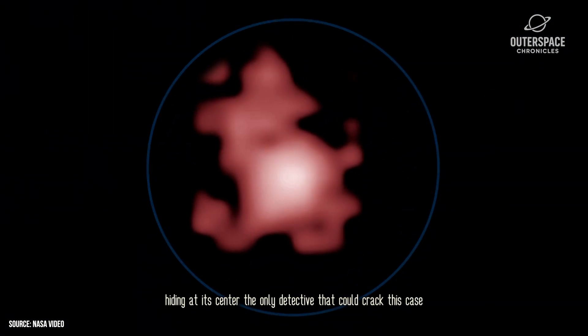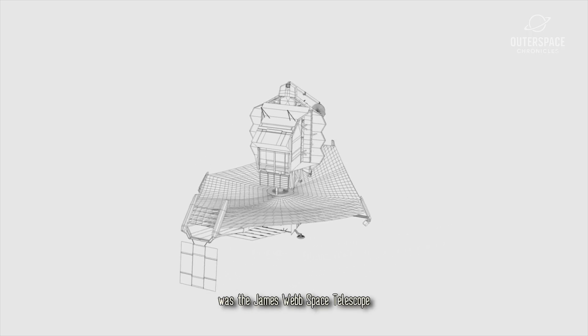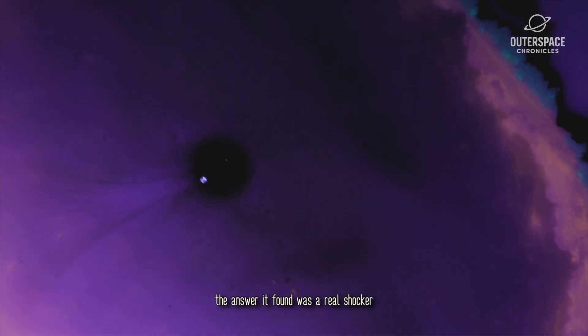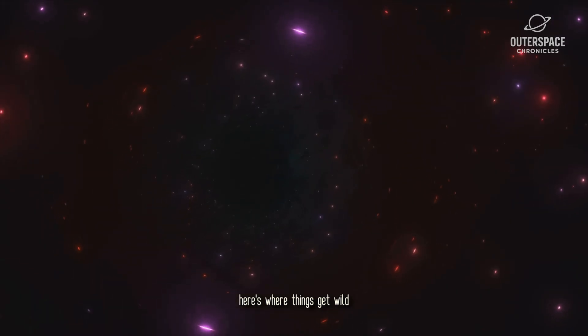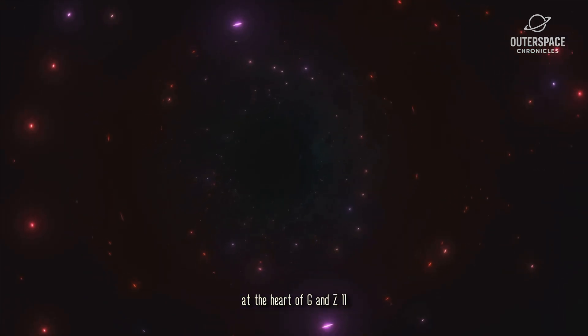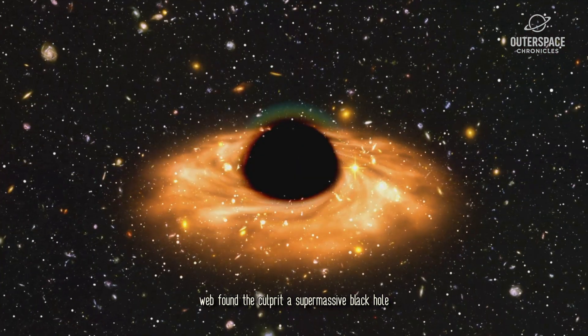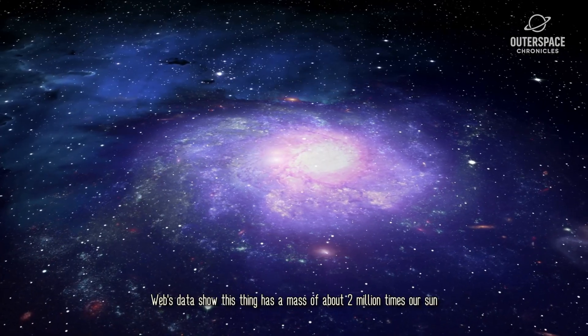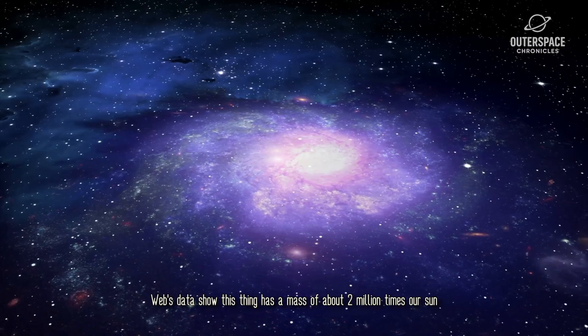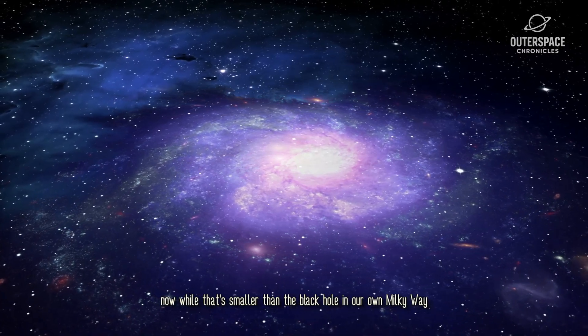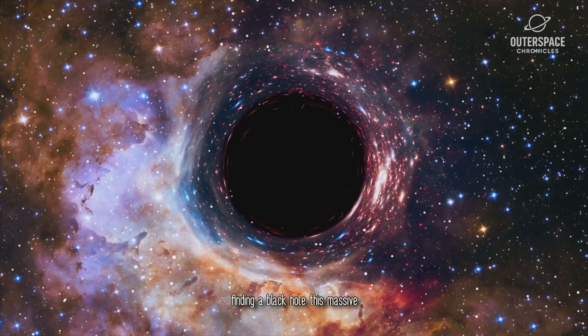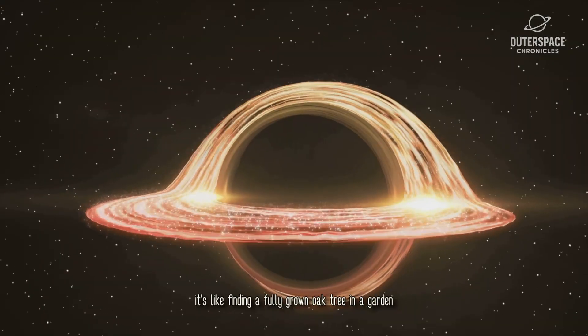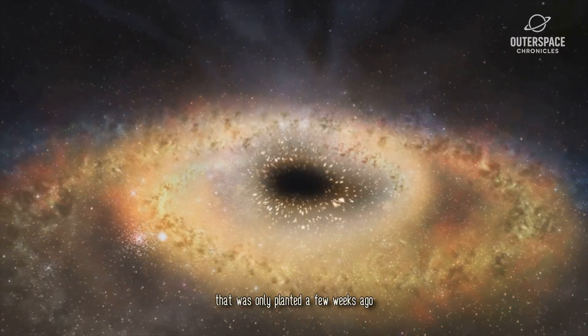The only detective that could crack this case was the James Webb Space Telescope. And when it pointed its powerful eyes at GNZ 11, the answer it found was a real shocker. Here's where things get wild. At the heart of GNZ 11, Webb found the culprit, a supermassive black hole. And we're not just talking about any black hole. Webb's data show this thing has a mass of about two million times our sun. Now while that's smaller than the black hole in our own Milky Way, finding a black hole this massive this early in the universe is a huge problem. It's like finding a fully grown oak tree in a garden that was only planted a few weeks ago.